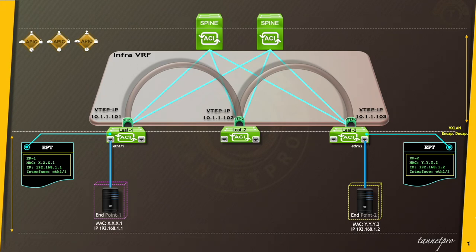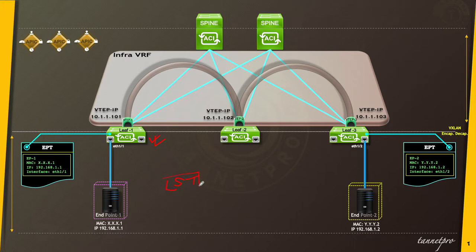This is the leaf-spine architecture diagram, also used in the previous video. In the previous video you saw how leaf switches learn endpoints, how many types of endpoints exist, how physical servers connect on the front panel, and how they build the LST — the Local Station Table, which is a subset of your endpoint table. The endpoint table contains all endpoint information: IP, interface, MAC address, and all related details.